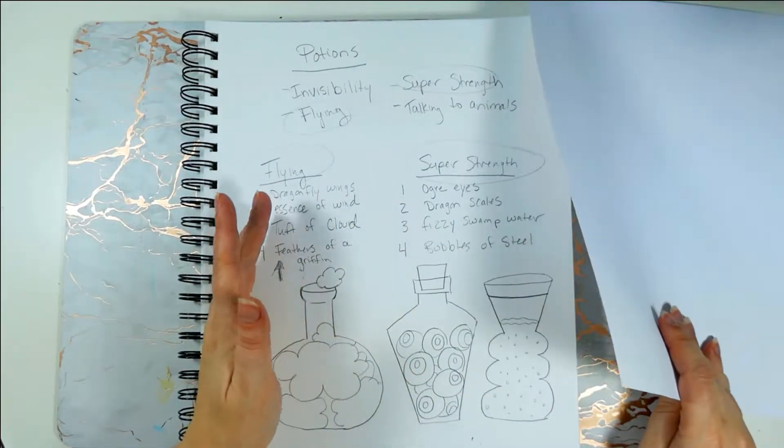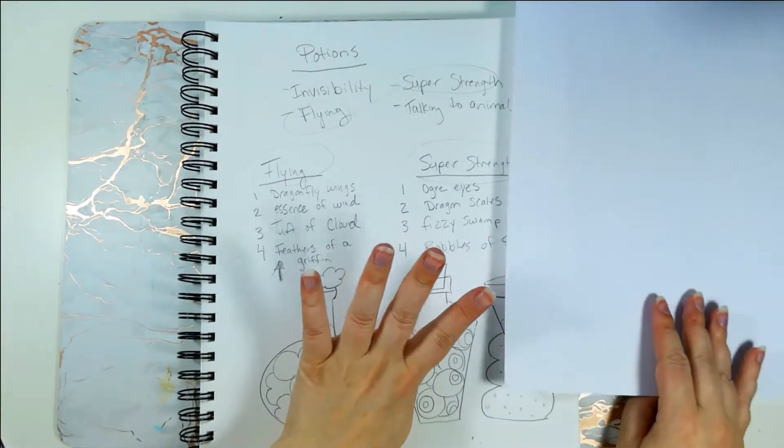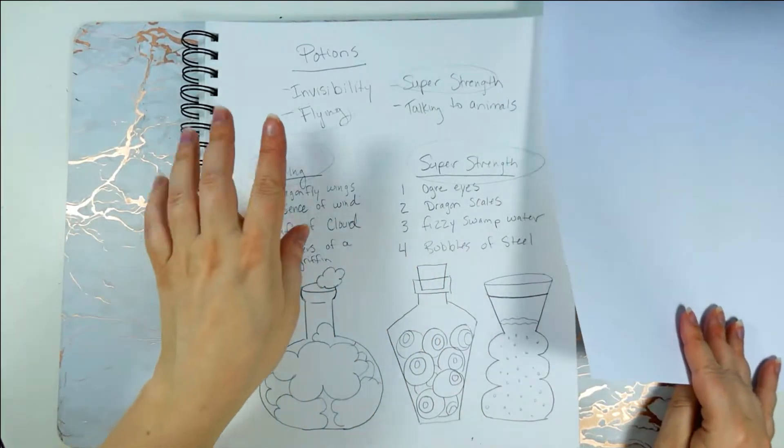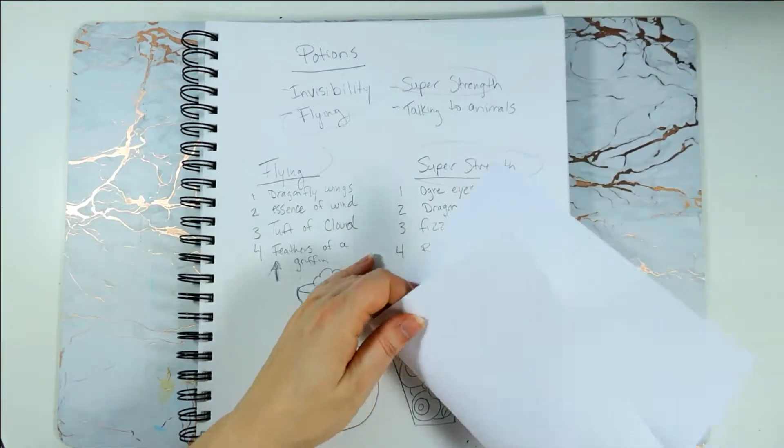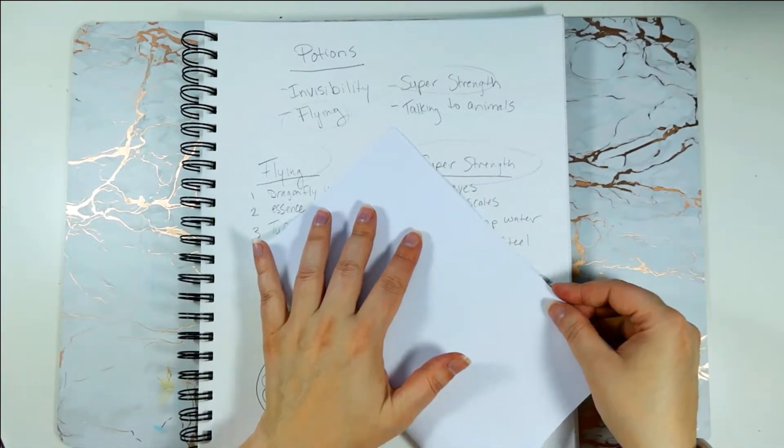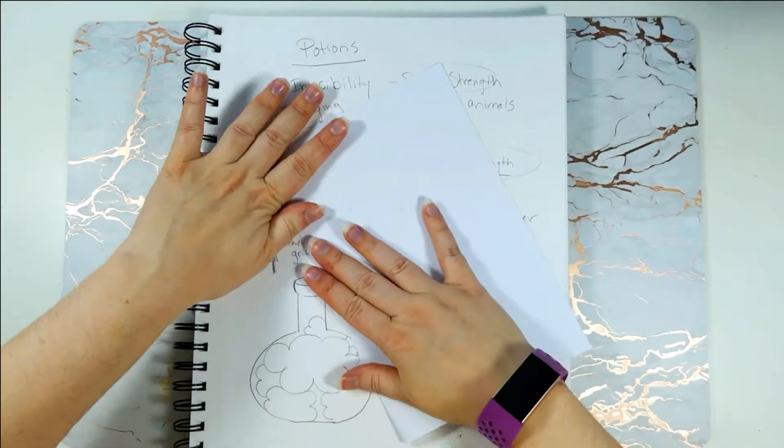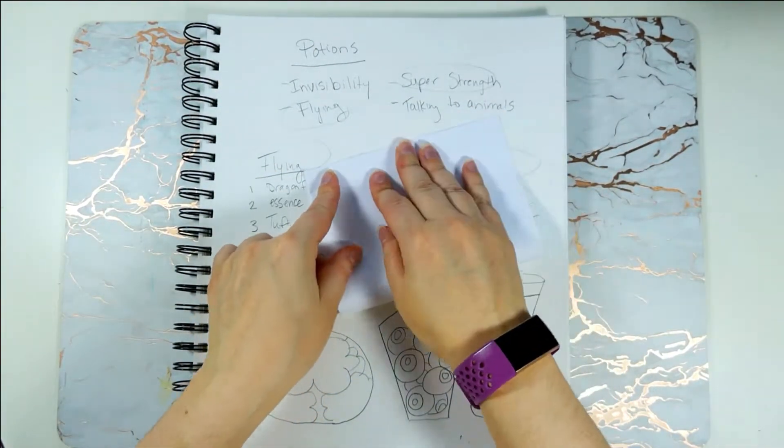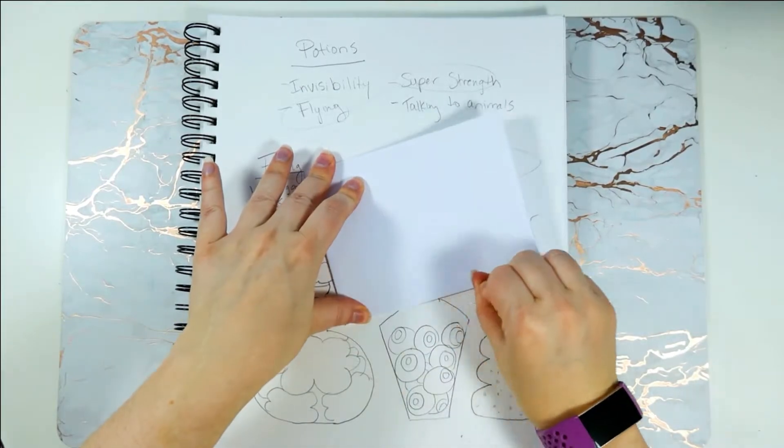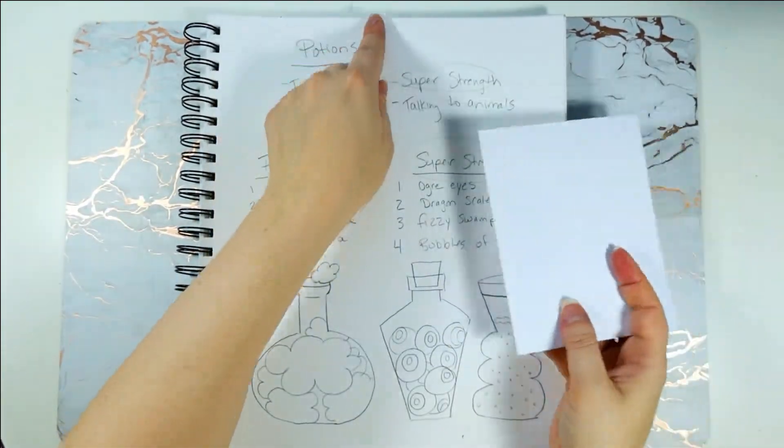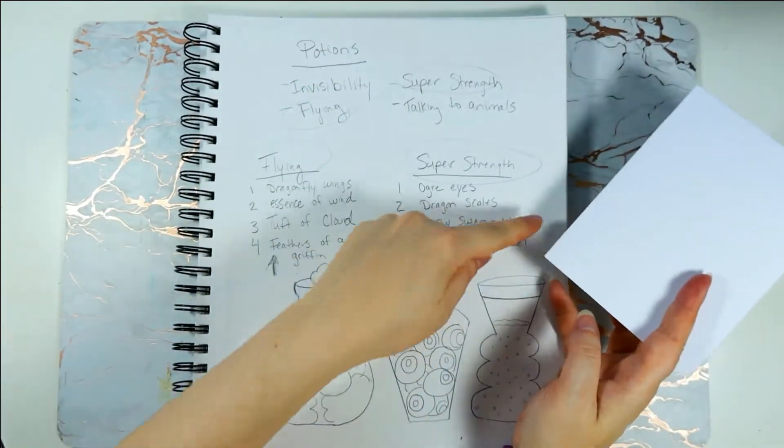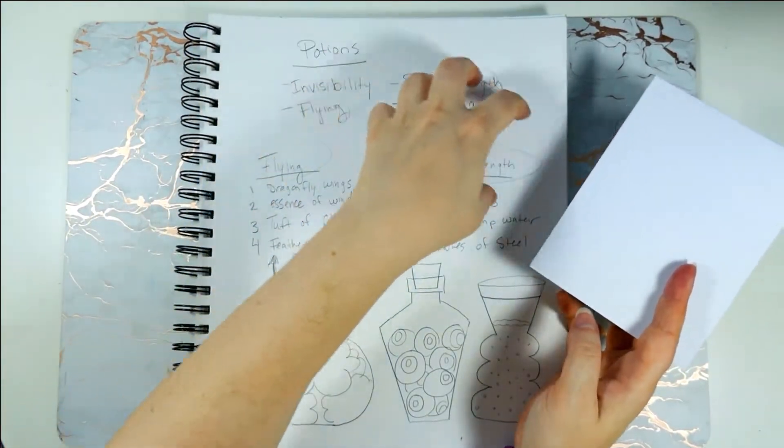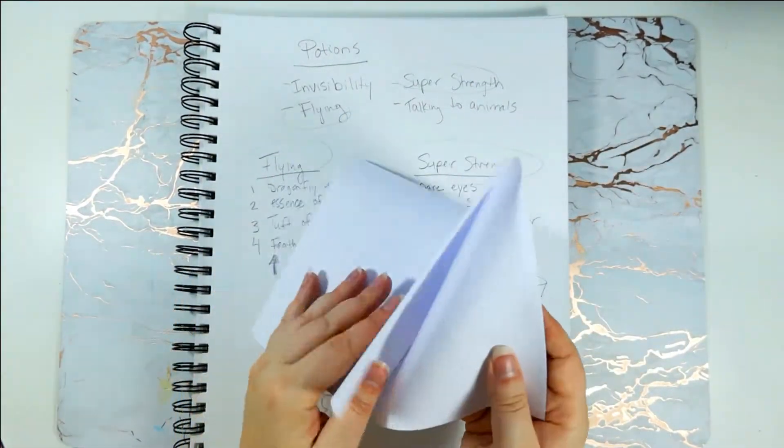Today we're going to make the four ingredient bottles for our super power potion and I have my plan with me. I'm going to take a piece of paper and fold it into four. If you're working out of a notebook or sketchbook just draw a line down the center and a line across so you'll have four sections.